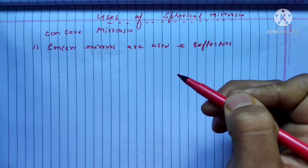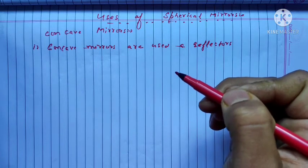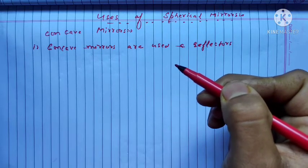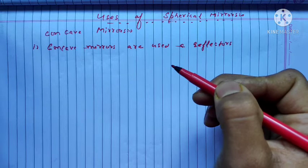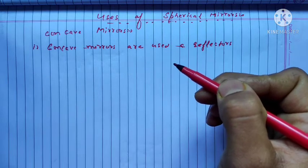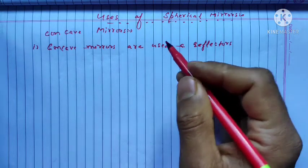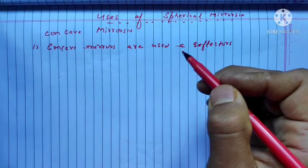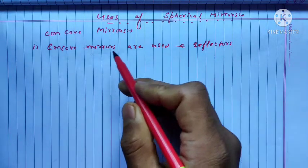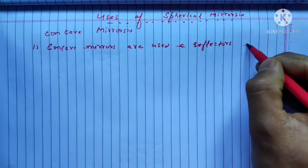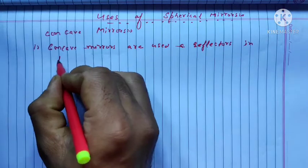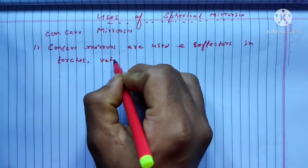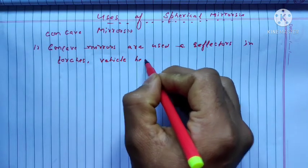For example, in our cars at night we need light that should be a powerful beam. Because concave mirrors have the property of focusing light at a particular point — they converge light to a point — and hence we get a powerful beam of light. So concave mirrors are used as reflectors in car headlights in order to get a powerful beam of light.